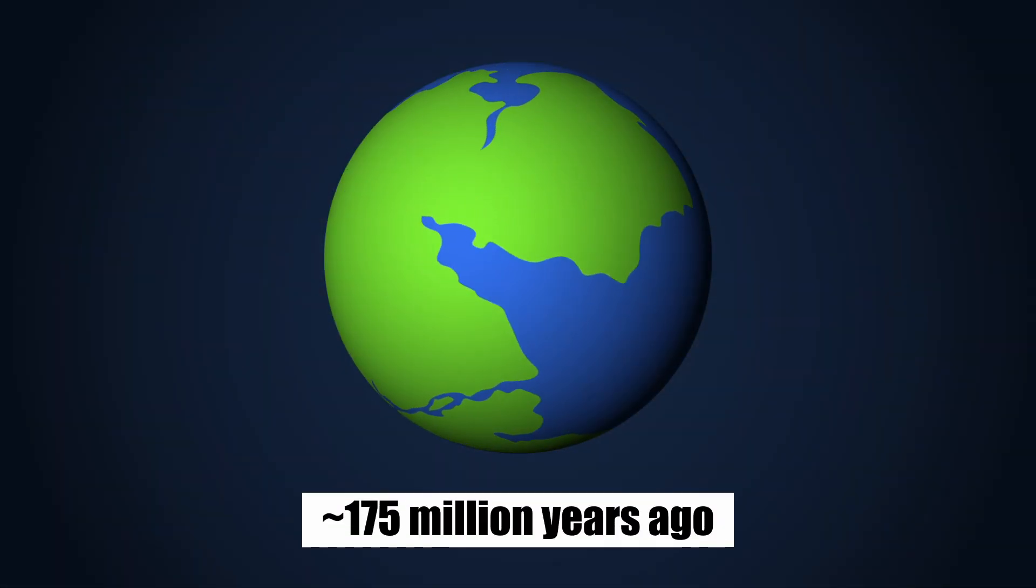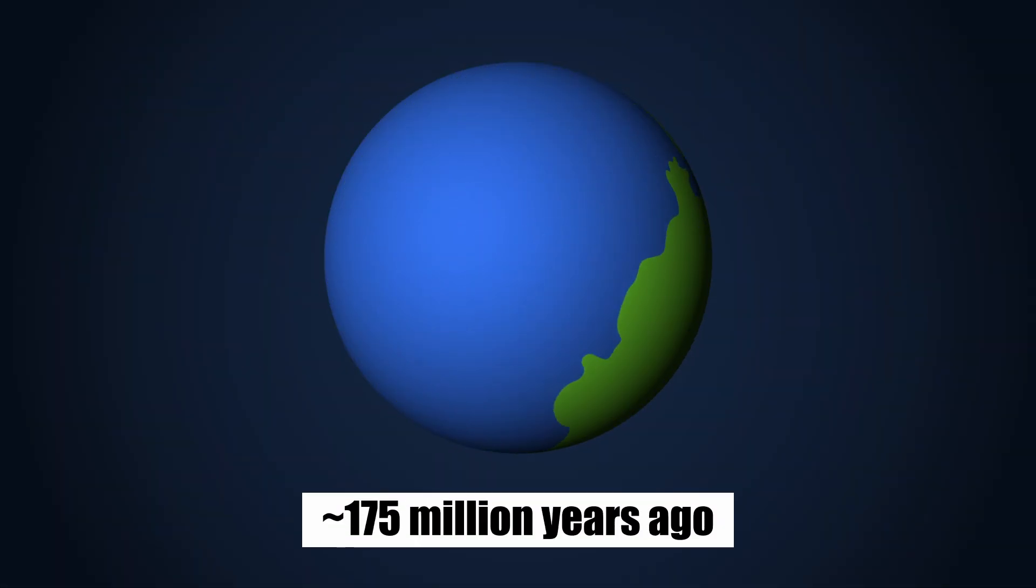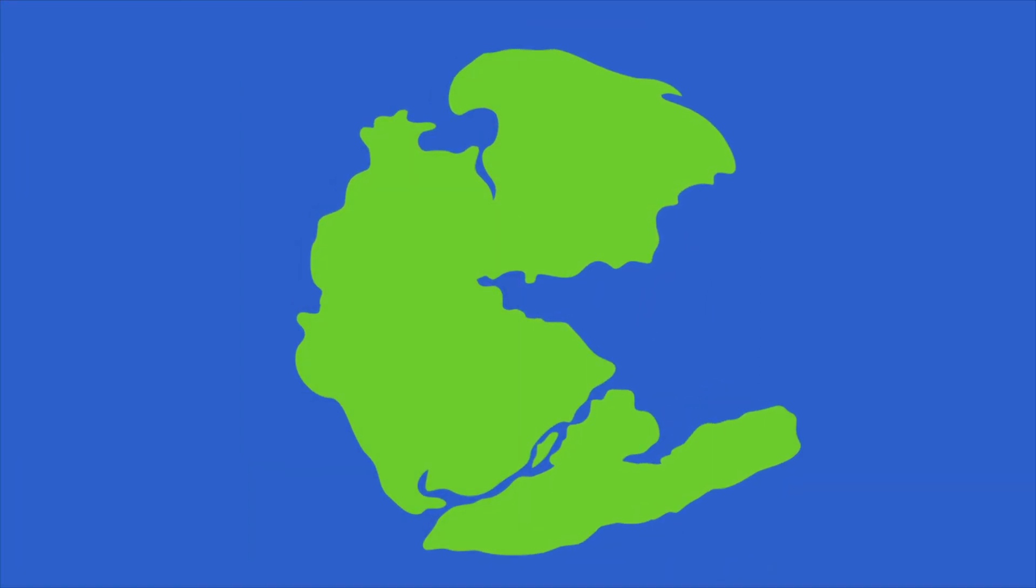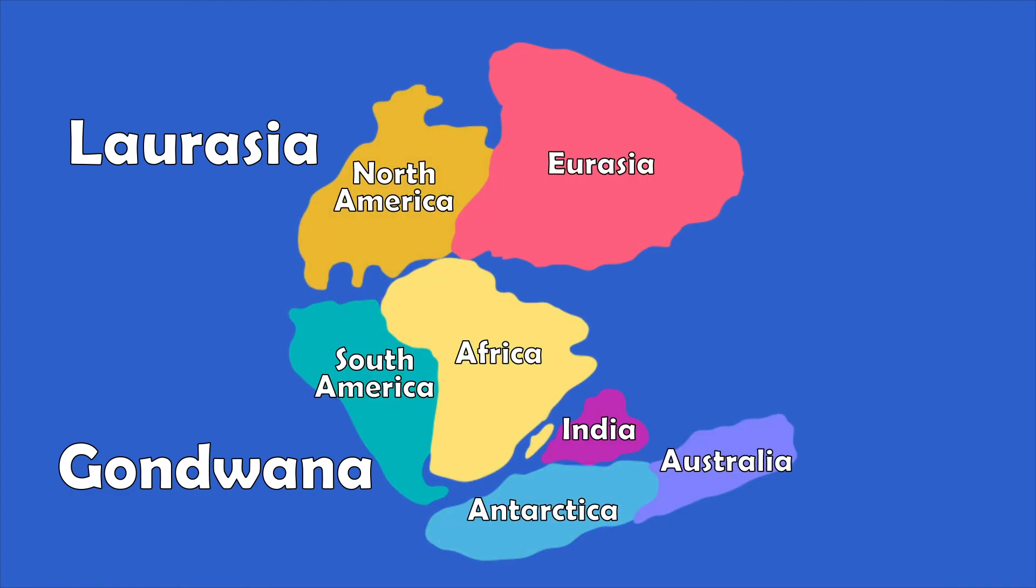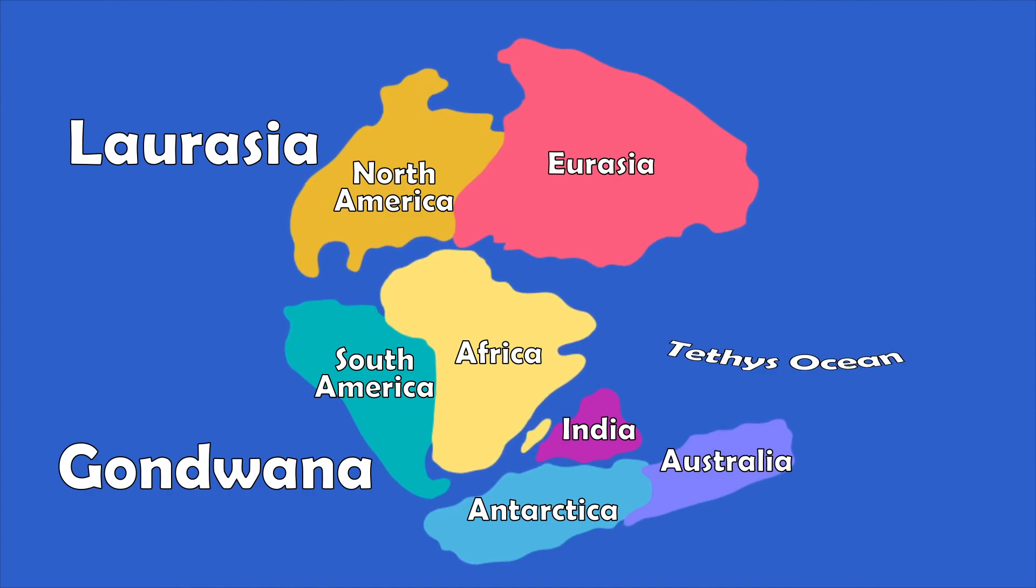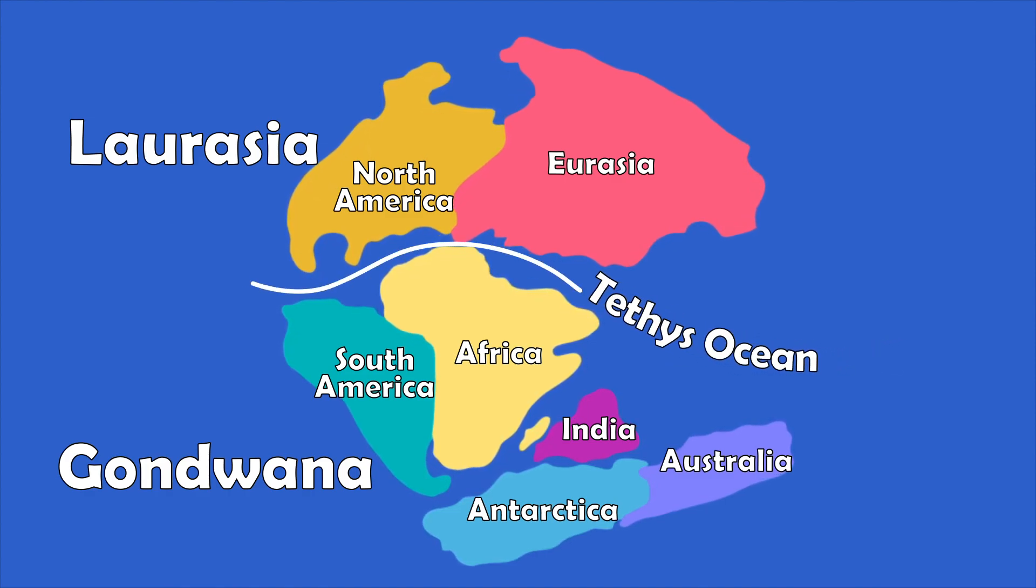Beginning around 175 million years ago, in the early to mid-Jurassic period, Pangea began to break apart. The resulting supercontinents that could be seen during this early separation was that of Laurasia and Gondwana, which connected the North America and Eurasia areas to the north, and the other landmasses to the south, with the Tethys Ocean filling the gaps in between.